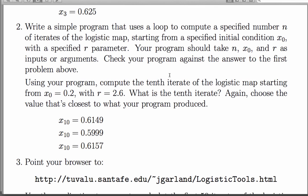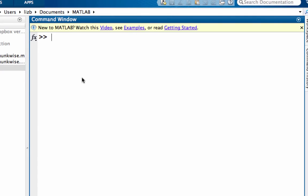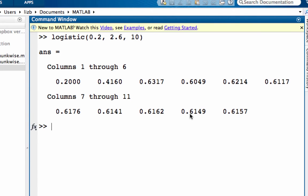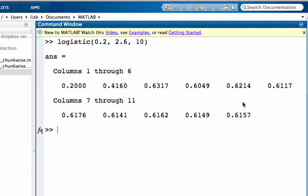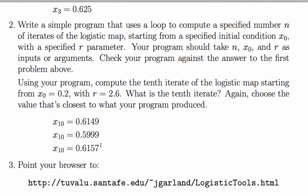So our task is to compute the tenth iterate, starting from x equals 0.2 with r equals 2.6. And I'm going to use my MATLAB program to do that. And here's the tenth iterate, right there, 0.6157. Here's the answer.